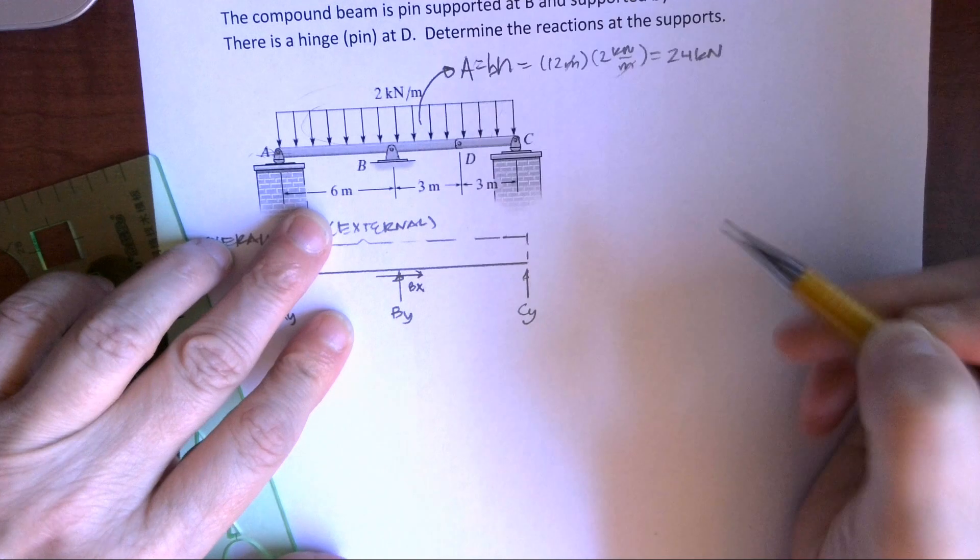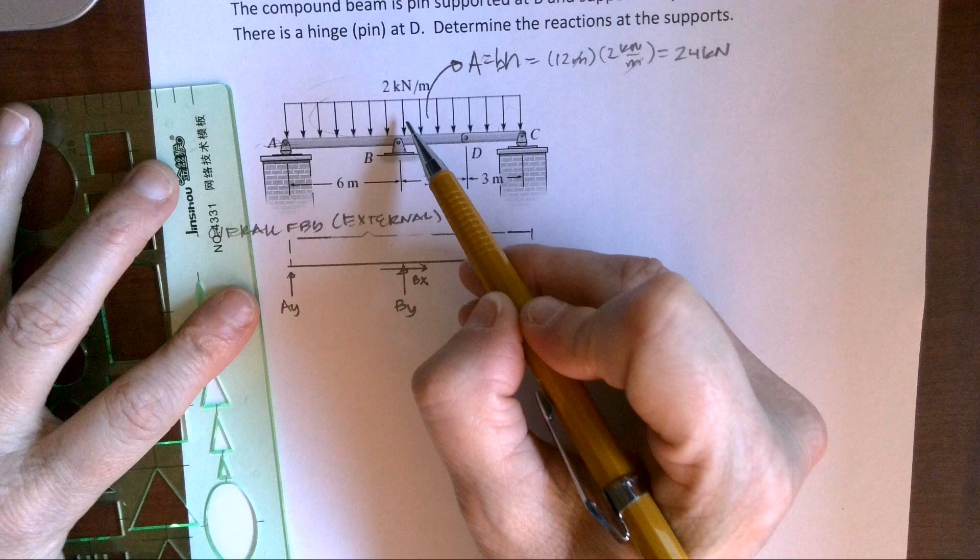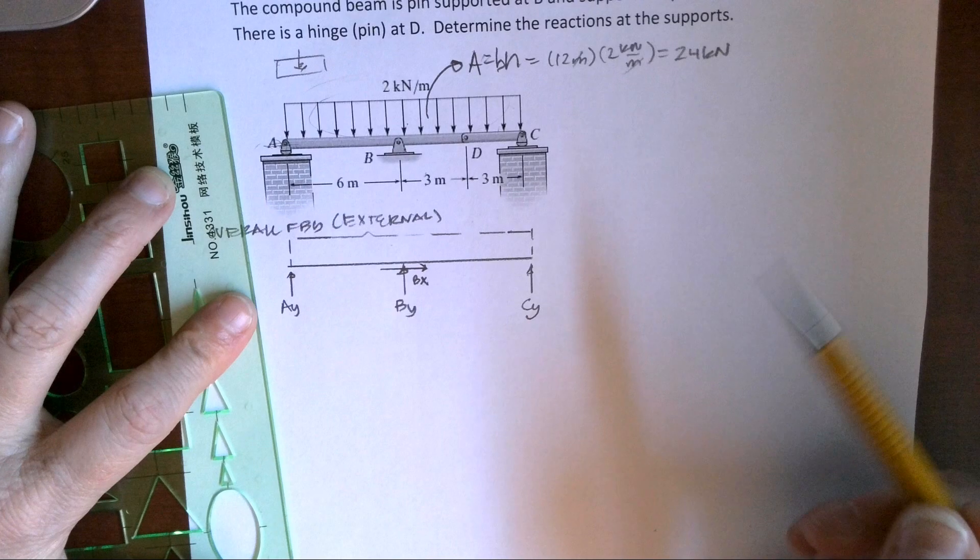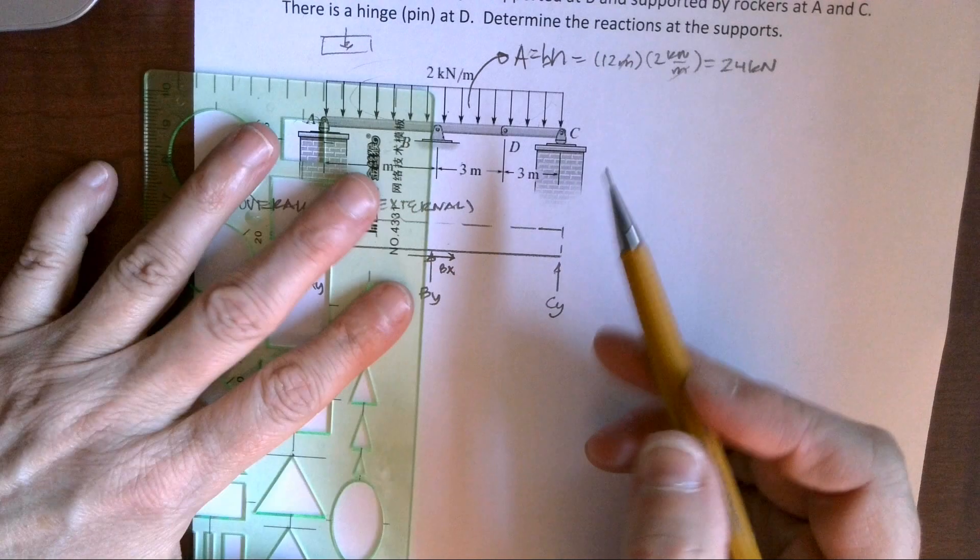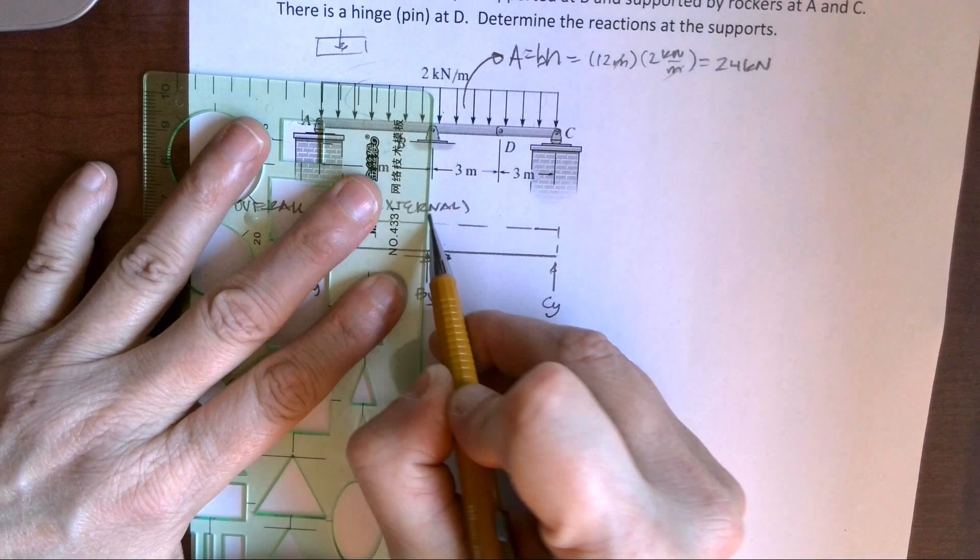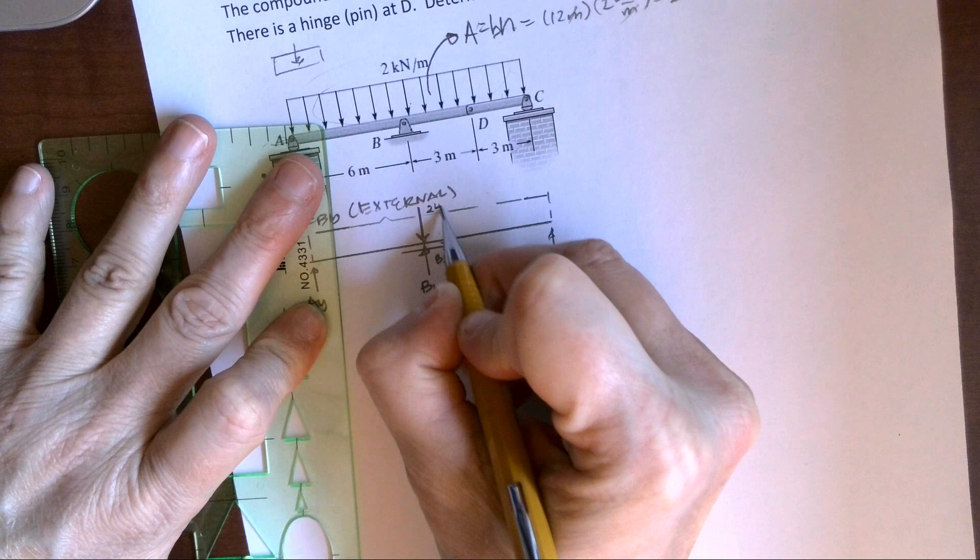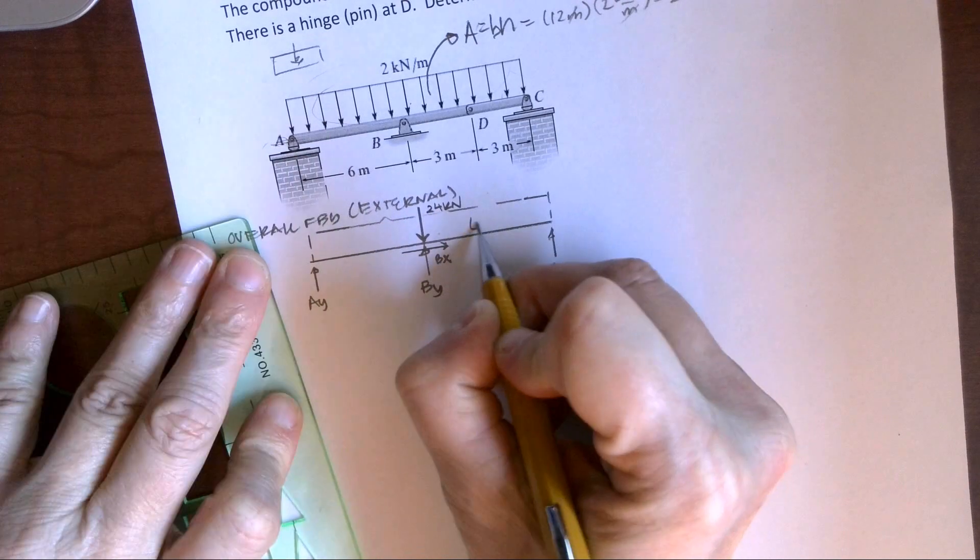The height is 2 kilonewtons per meter. My meters cancel out and I'm left with 24 kilonewtons. I also know that when I have a rectangle, the centroid is right through the center. So that 24 kilonewtons is actually applied right there on B.